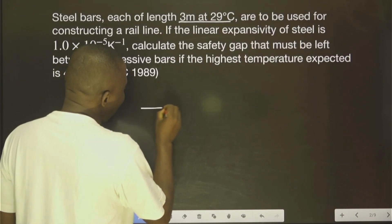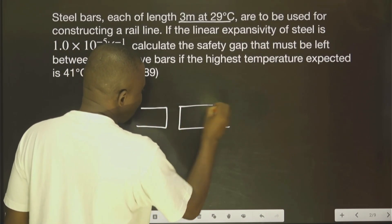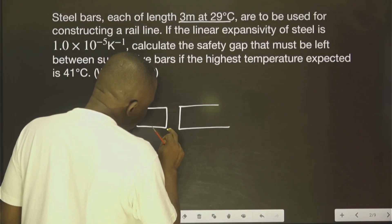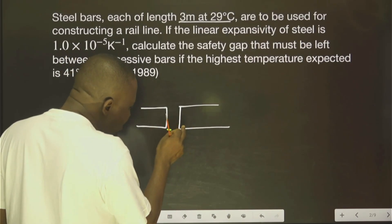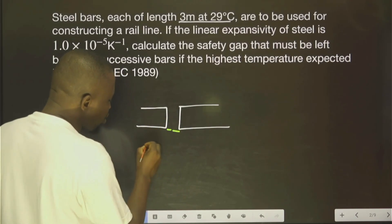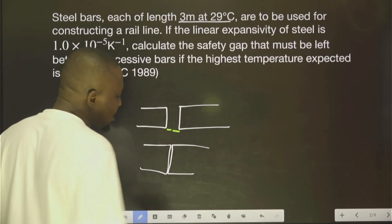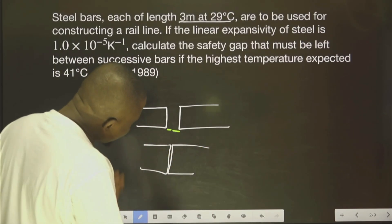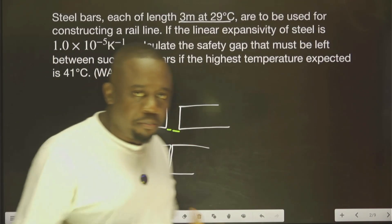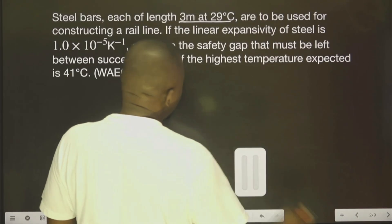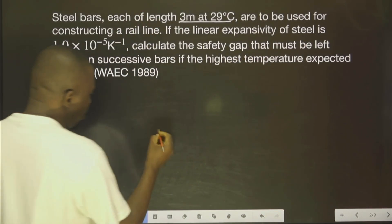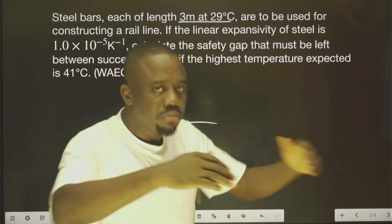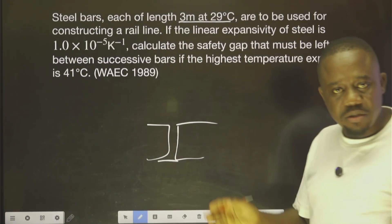Say this is a bar and another bar. When you heat this bar up — that is an iron bar — it will expand. When it expands, we expect it to get to a certain level. We want a situation whereby we don't close this gap, so that we give allowance for expansion. If you set it up without a gap, when both bars expand, the structure might collapse. That is the reason why if you are driving on different bridges across the world, you will see that there is always a gap given — all these are given as allowance for expansion.